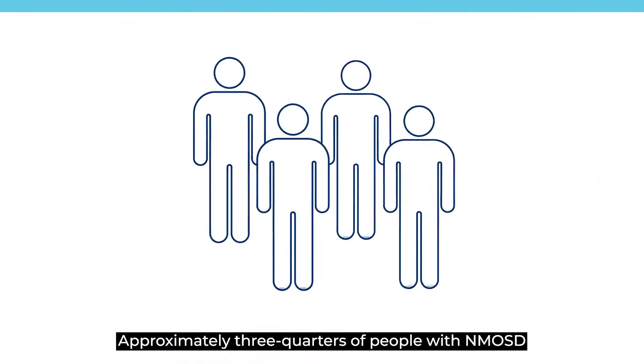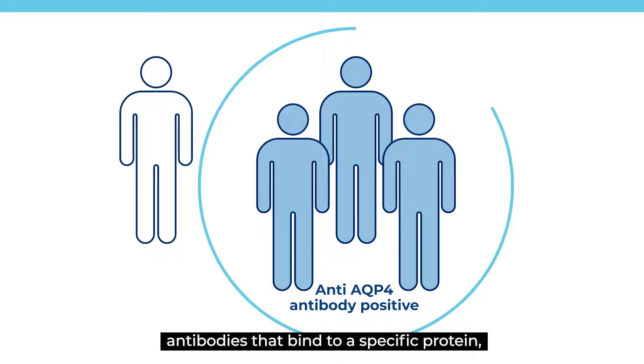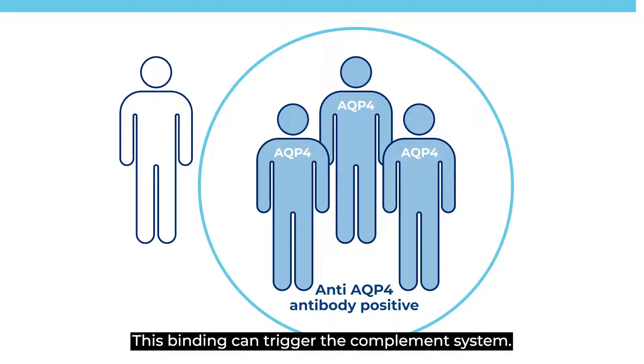Approximately three-quarters of people with NMOSD are anti-AQP4 antibody positive, meaning they produce antibodies that bind to a specific protein, aquaporin-4 or AQP4. This binding can trigger the complement system.